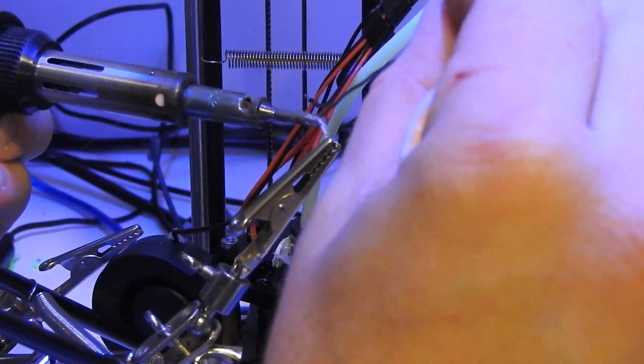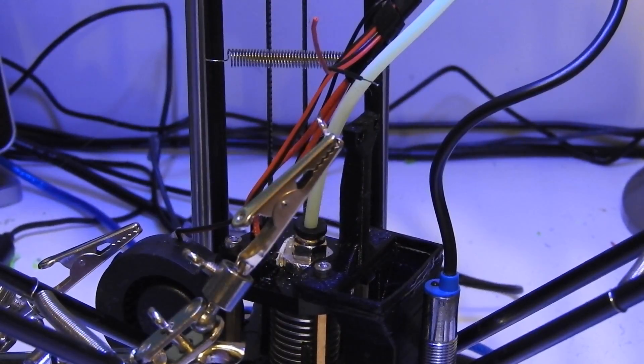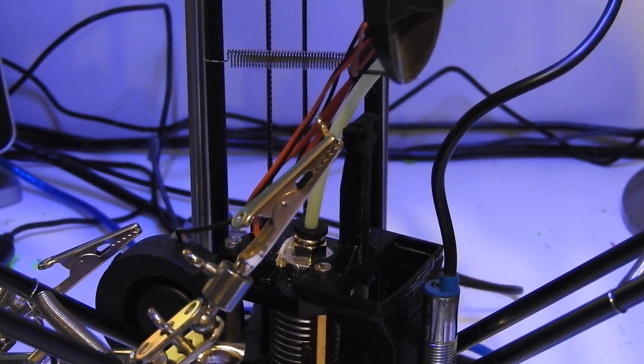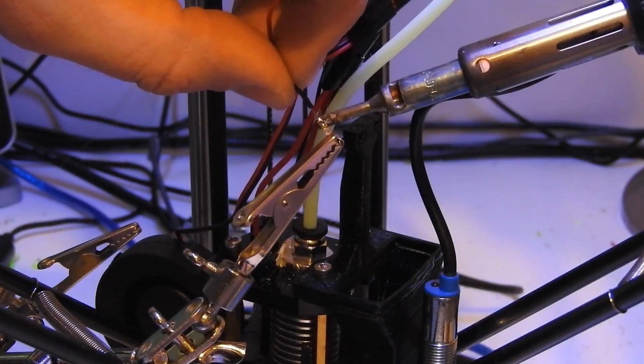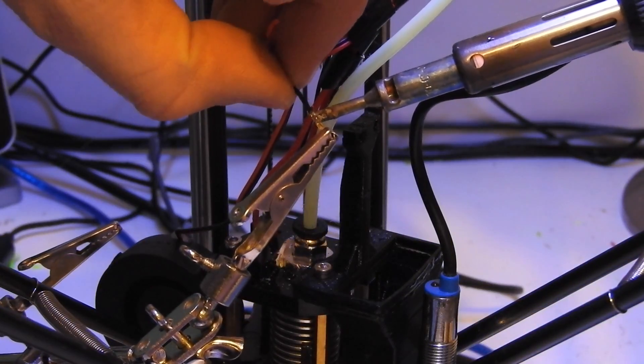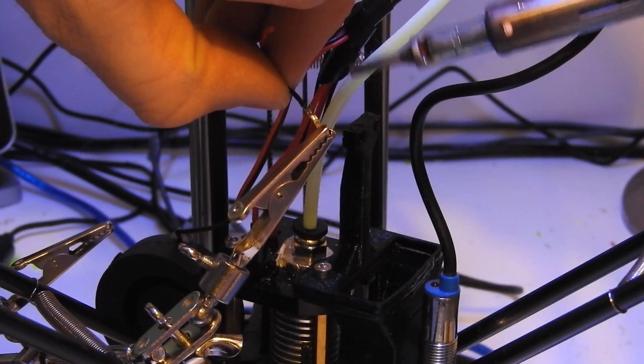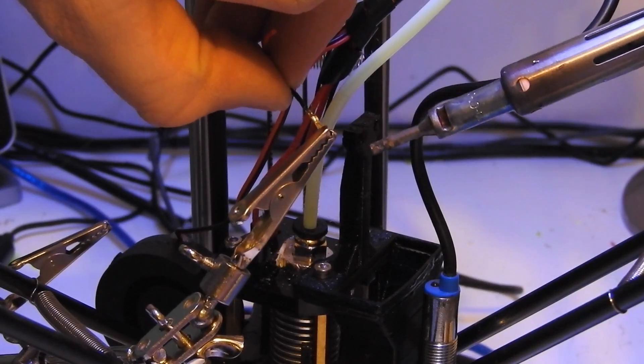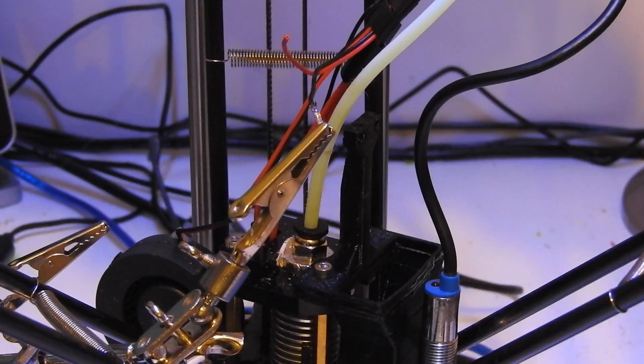Okay and just adding the tiniest bit of solder again. Just cut that wire back to about 5 mil. And then you've just got to do it for the other wire.